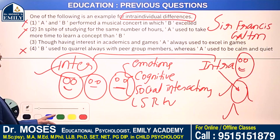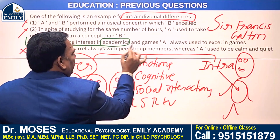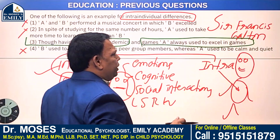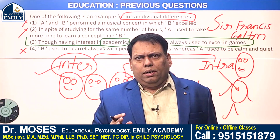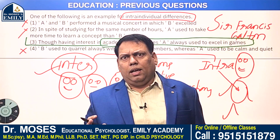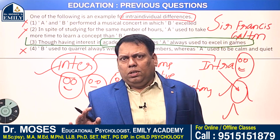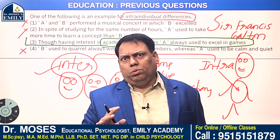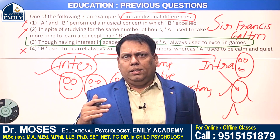The third example: though having interest in academics and games, A always used to excel in games — like Sachin Tendulkar. Sachin Tendulkar always participated in cricket rather than studying English; that is why he failed in English in 10th class. Today, the first lesson of Maharashtra's English textbook in 10th standard is Sachin Tendulkar's biography. If you guide students based on their aptitude and interest, they will excel in any area.